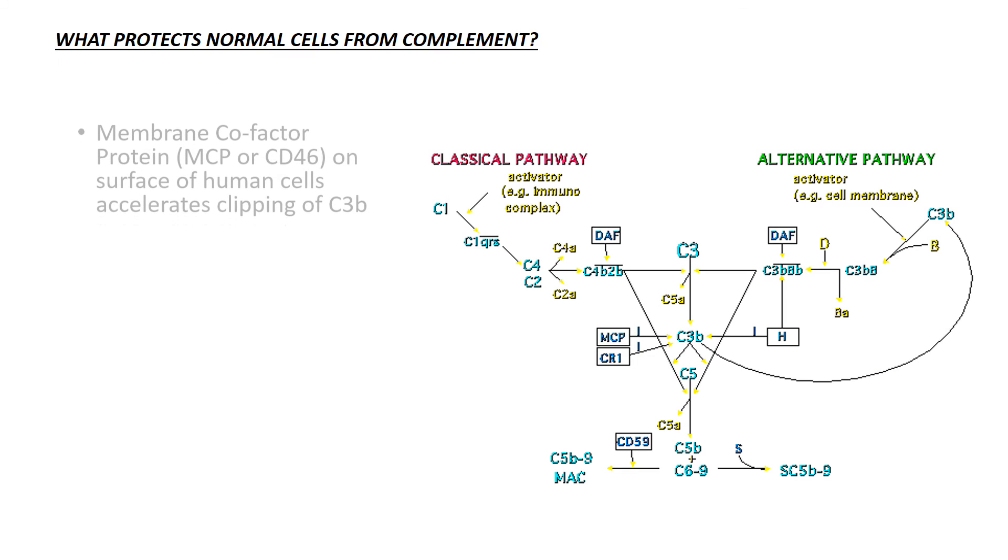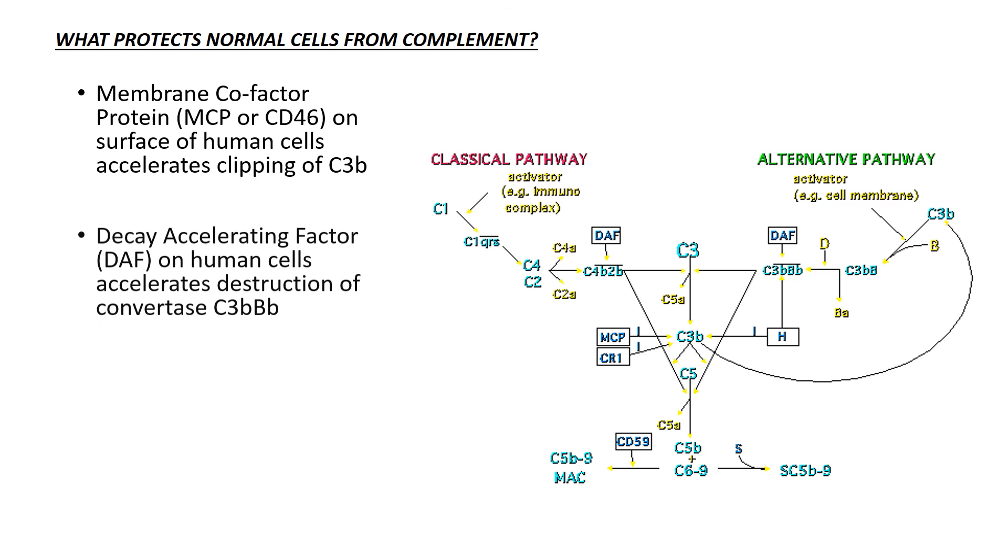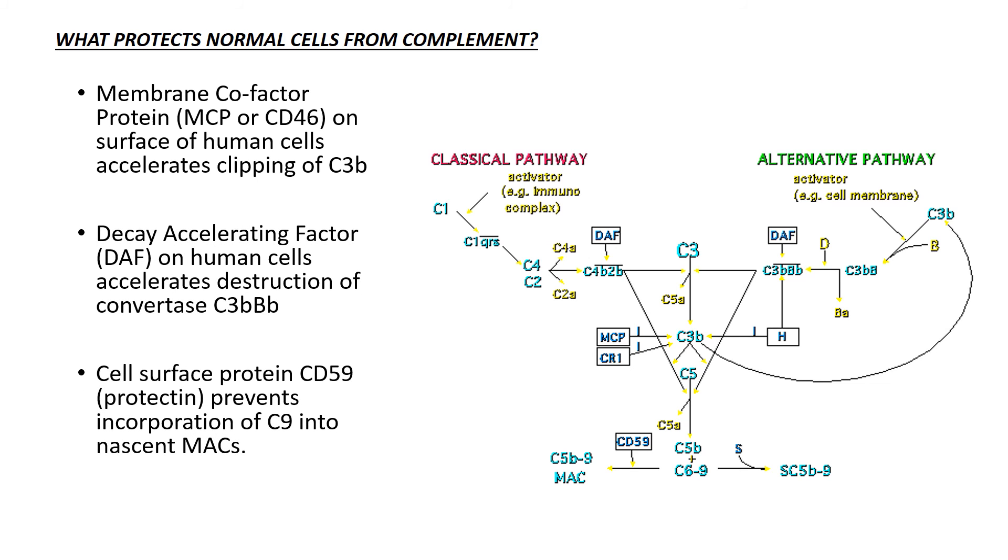Normal cells are protected from complement by: 1. Membrane cofactor protein (MCP or CD46) on the surface of normal cells, 2. Decay accelerating factor (DAF), which is deficient in paroxysmal nocturnal hemoglobinuria, and 3. Cell surface protein CD59 (protectin).